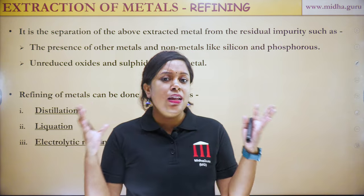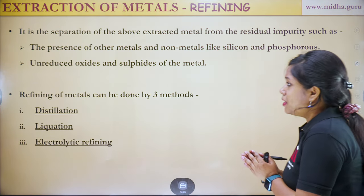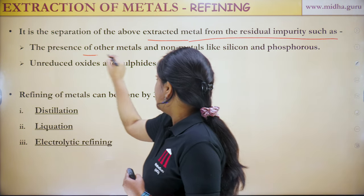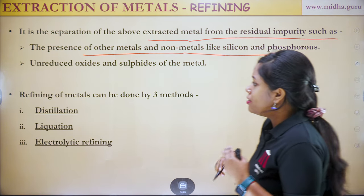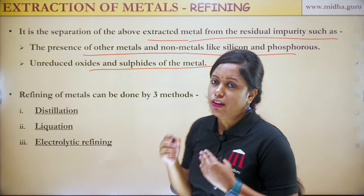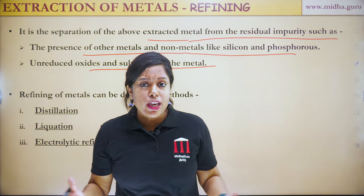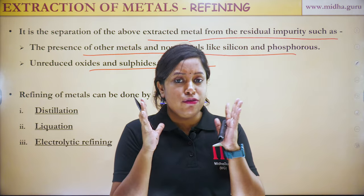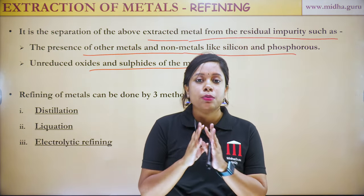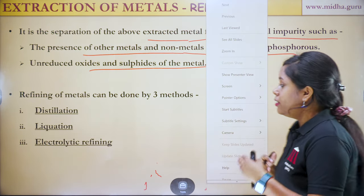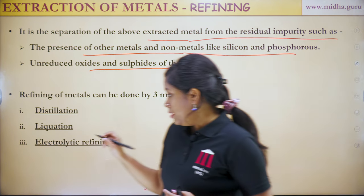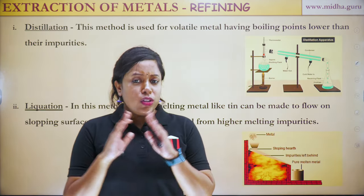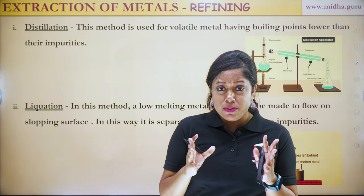After the reduction process, the last step is refining — separation of the extracted metals from residual impurities such as other metals, non-metals like silicon and phosphorus, unreduced oxides, and sulfides. Refining gives approximately 99.9% pure metals. The refining process can be done in three ways: distillation, liquation, and electrolytic refining.